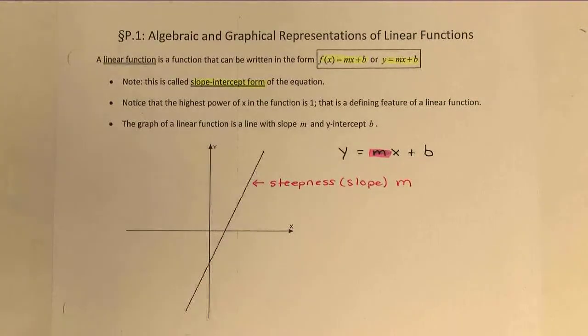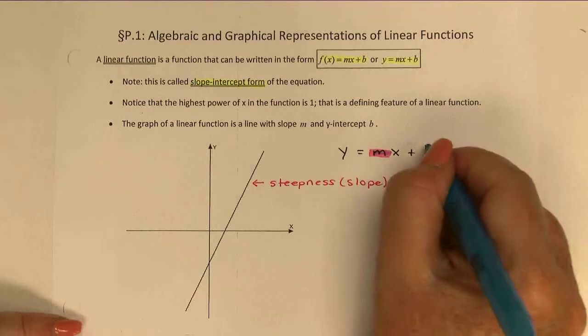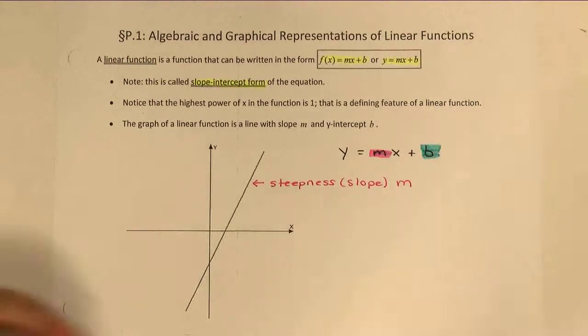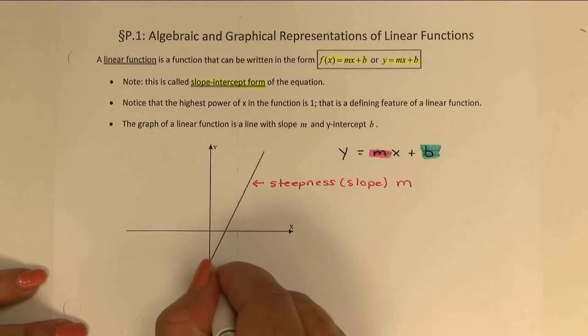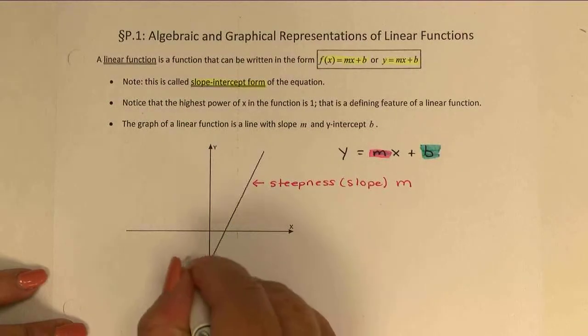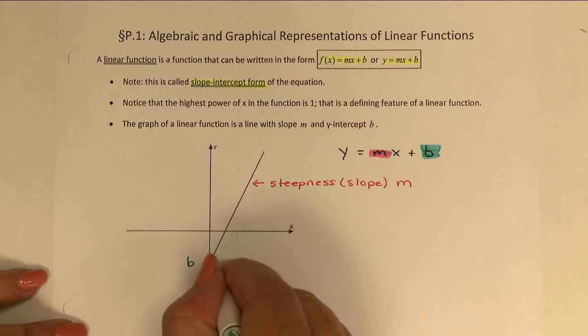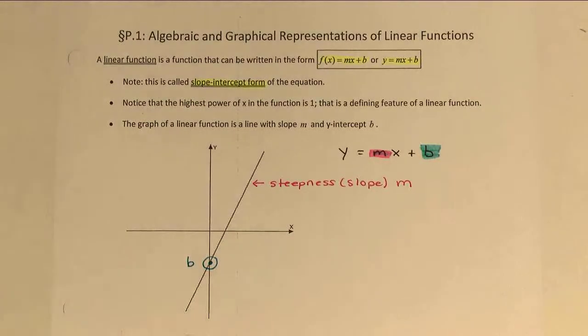The value of b refers to the y-intercept, or the point where the graph crosses the y-axis. So in this picture, our b value would be this y value right here. We'll talk quite a bit more about finding numerical values for m and b a little bit later on. For now, let's take a look at the six examples at the bottom of the page. And right now, all we want to do is decide which of these represent linear functions.